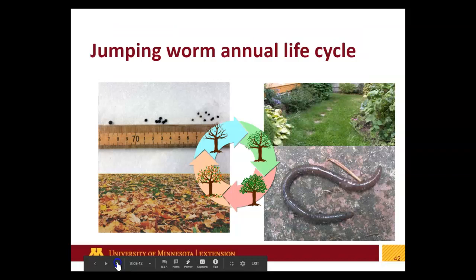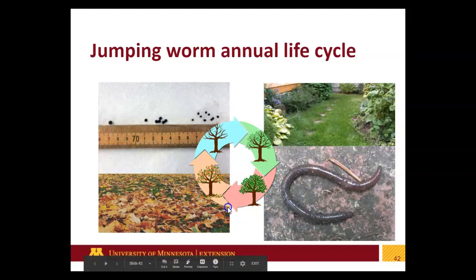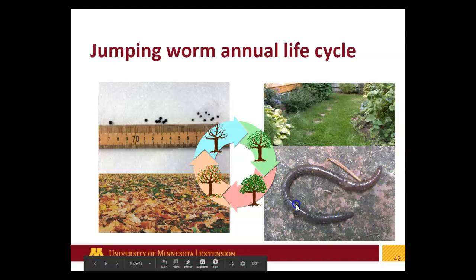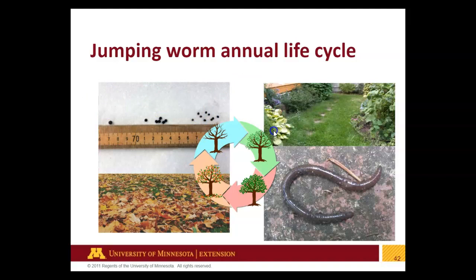Let's talk about the jumping worm annual life cycle — it is different than most other worms in that they are annual. They only persist in a landscape for one year and they overwinter as eggs. In the fall, adults are mature and starting to die off; they're laying eggs that can persist in the leaf layer. Those eggs overwinter in little cocoons. In the spring, those cocoons hatch into small baby worms. Come July and August, people start finding a lot of mature jumping worms. Importantly, unlike most of our worms, jumping worms do not overwinter as adults — they overwinter as egg cocoons.